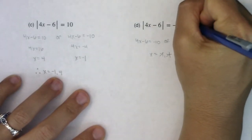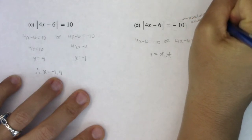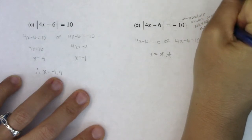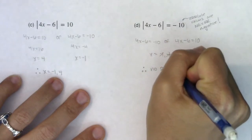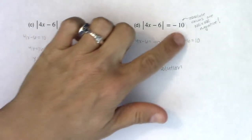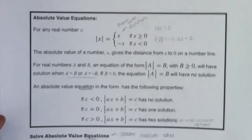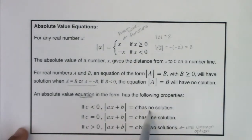Let's write this down: absolute values are never negative. So right away I could tell there was no solution. If you can recognize that, you save yourself time — I don't need to go through all those steps. I just say there are no answers. If the number on the right side of the equation is less than zero — and negative 10 is less than zero — then the absolute value equation has no solution.